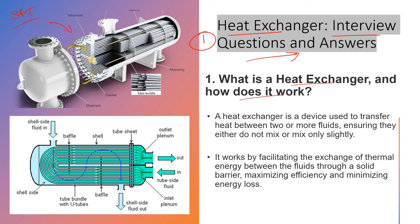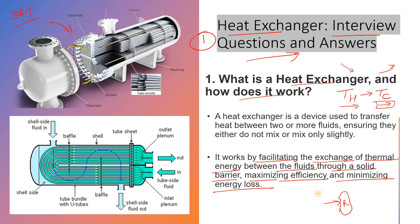For example, if you need to send fluid to a reactor and want maximum conversion, the fluid entering the reactor must have a specific temperature. We use a heat exchanger to achieve that temperature — whether cooling or heating the fluid. That covers the basic definition of a heat exchanger and how it works.